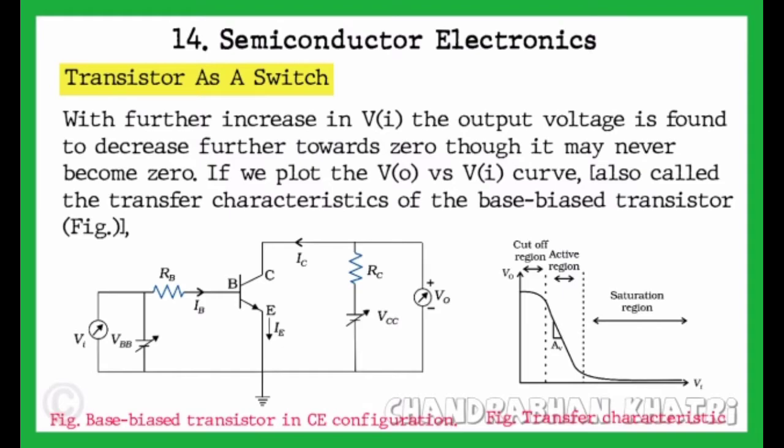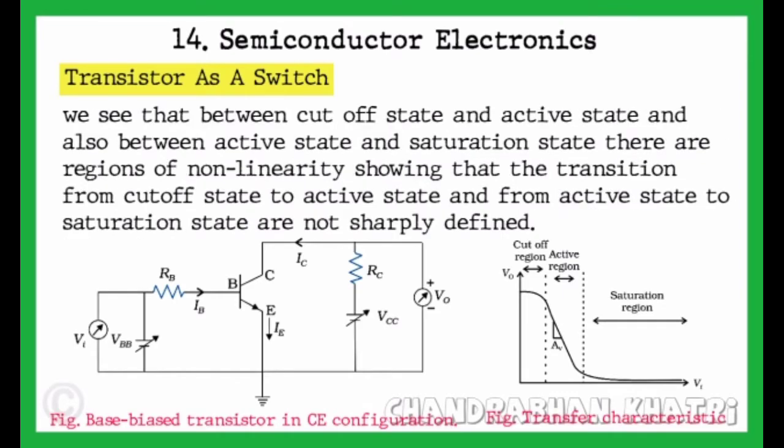If we plot the V0 versus VI curve, also called the transfer characteristics of the base-biased transistor as shown in figure, we see that between cutoff state and active state, and also between active state and saturation state, there are regions of non-linearity, showing that the transition from cutoff state to active state and from active state to saturation state are not sharply defined.